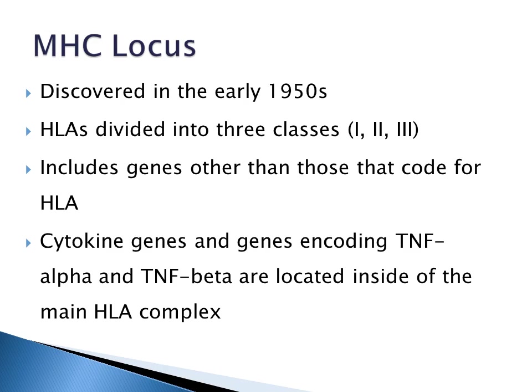The MHC locus was discovered in the early 1950s. Human leukocyte antigens are divided into three classes: class 1, class 2, and class 3. The MHC locus includes genes other than those that code for human leukocyte antigens. Cytokine genes and genes encoding tumor necrosis factor alpha and tumor necrosis factor beta are located inside of the main HLA complex.